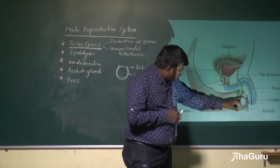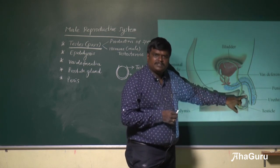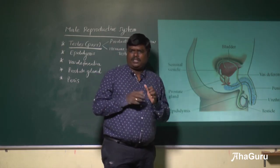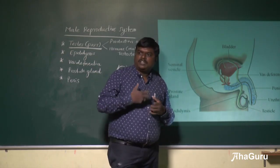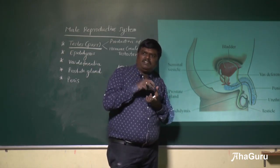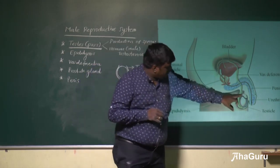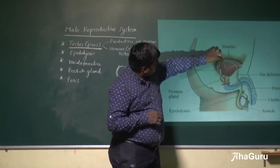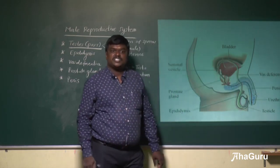Above the testis, you can see the epididymis. This structure stores the sperms. Continuously, the seminiferous tubules produce a lot of sperms, which are temporarily stored in the epididymis. The epididymis extends and forms a tube called the vas deferens or vas deferentia.